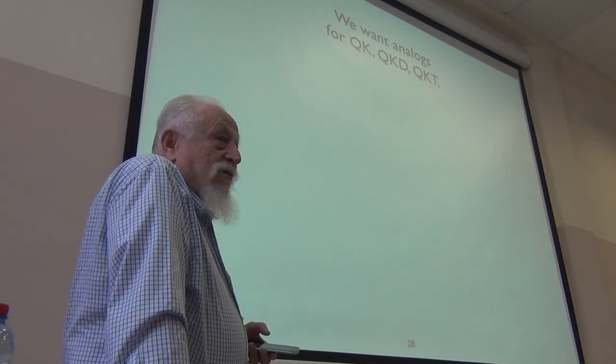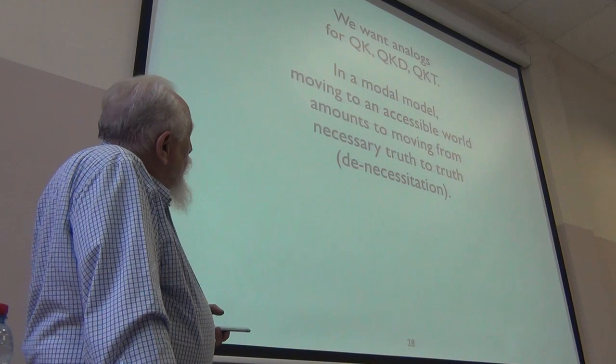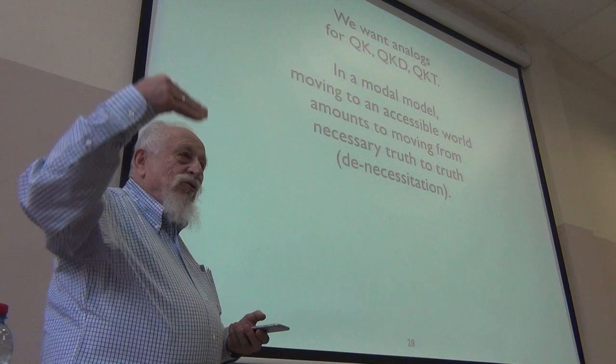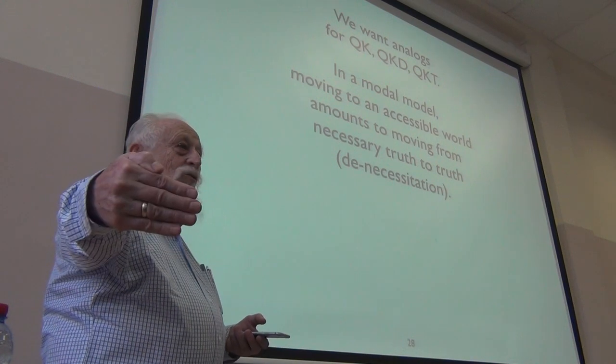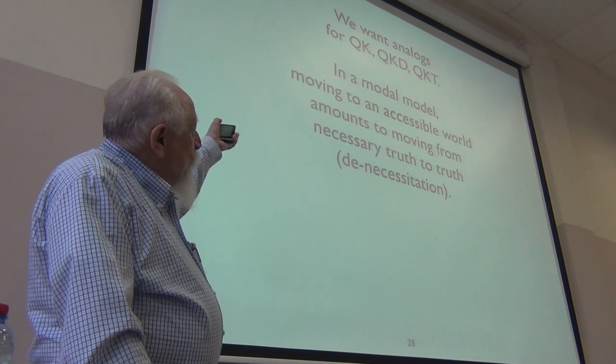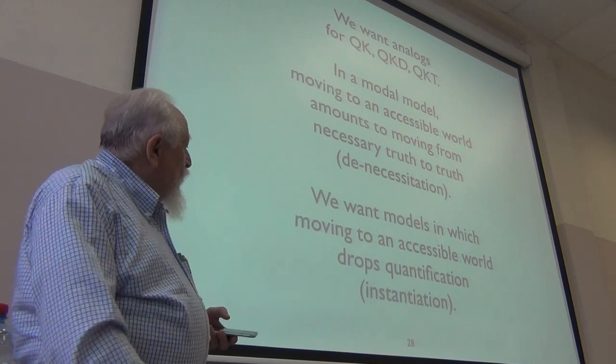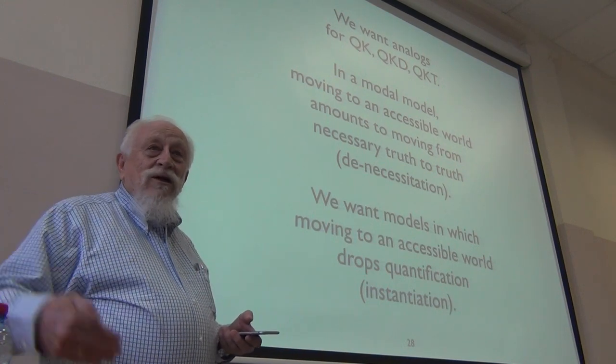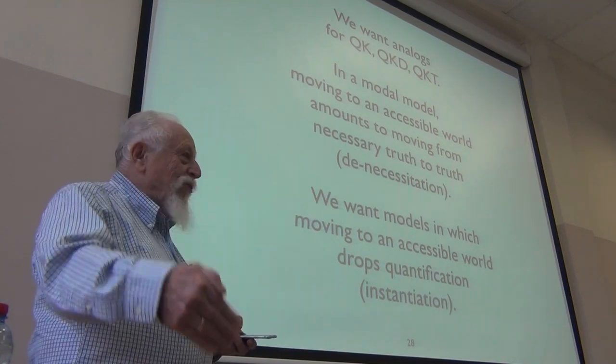Okay, so theorems of K are valid in all models like this. Theorems of KD are valid in all models with serial accessibility which also has other names, but what it means is any world has some world accessible from it. Theorems of KT are valid in all models where accessibility is reflexive. Okay, so what I want is analogs for these quantificational logics. Now, in a modal model, when you move to an accessible world, you move from necessary truth to truth. If box X is true at a world and you move to an accessible world, you're at a world where X is true, you've lost the box. So it's kind of a move to an accessible world is a kind of a de-necessitation. I want models in which moving to an accessible world drops a quantification, which in effect is doing an instantiation. So, moving to an accessible world should instantiate your universal quantifiers.